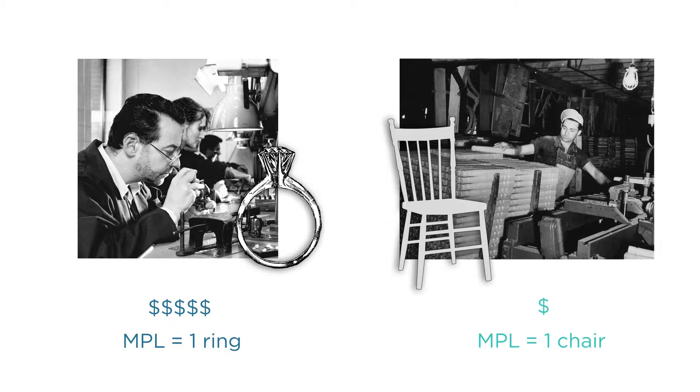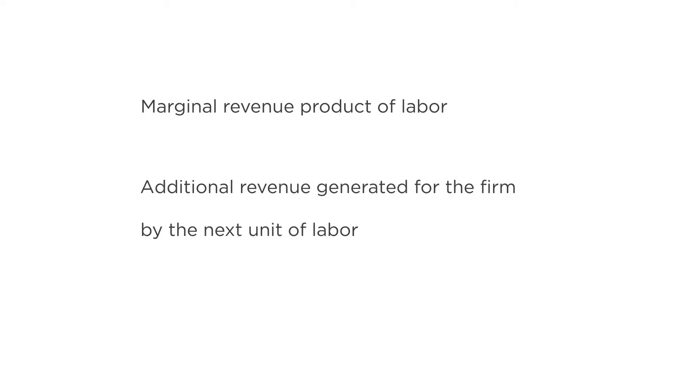What the firm cares about is not the marginal product of labor, but the marginal revenue product of labor, or the additional revenue generated for the firm by the next unit of labor. The revenue a firm gets from one more good is simply the price, P, in a competitive market.